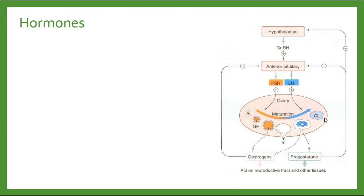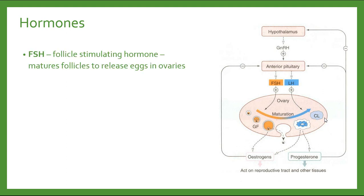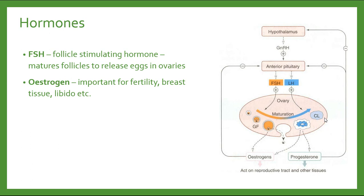The hormones involved in this process include follicle stimulating hormone (FSH), which comes from the pituitary gland. This travels to the ovary and helps the egg to mature within the follicle. There's also oestrogen, which is one of the hormones produced by the ovary itself. It's very important in terms of fertility — it helps in the production of breast tissue, maintaining sex drive, and many different features that are important for reproduction.